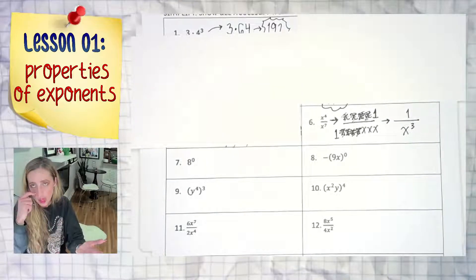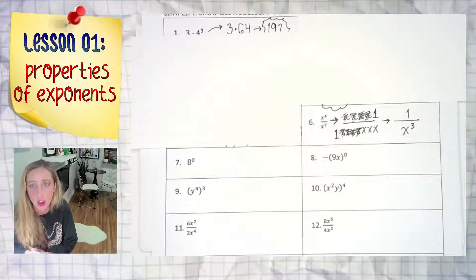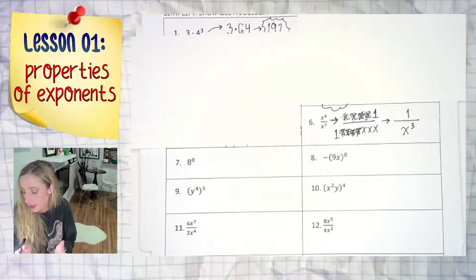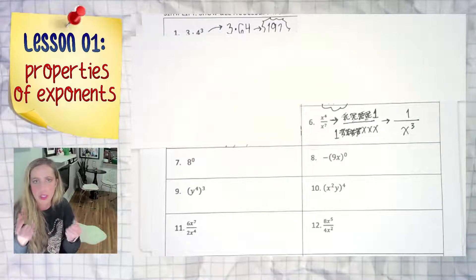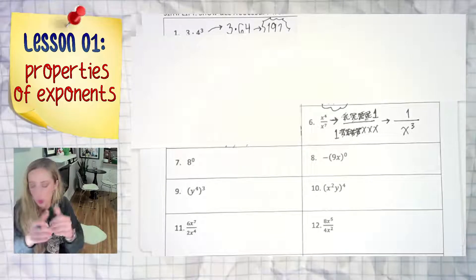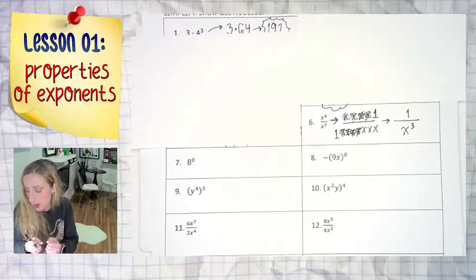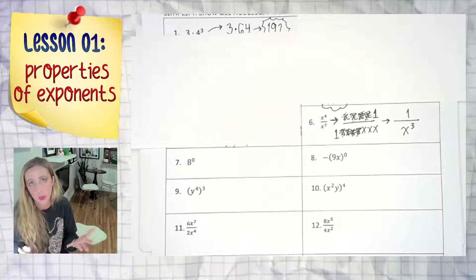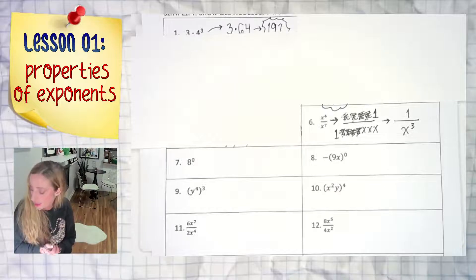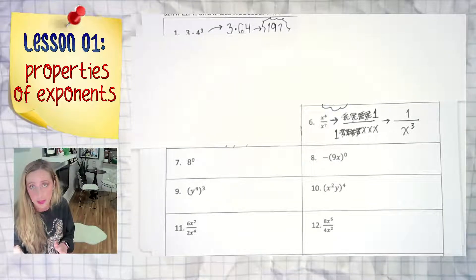The more quick and less chaotic-looking way to do this problem is I just say to myself: x to the fourth on top, x to the seventh on bottom. If it's a tug of war, who's bigger, stronger, who's going to win? x to the seventh is going to win, so it's going to pull my answer down to the bottom. We're just going to subtract: seven take away four, we're left with three. So we have one over x to the third.